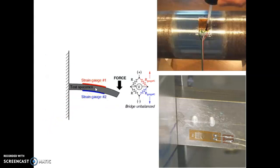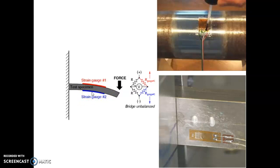Here is an example of using two strain gauges to measure force. A cantilever member has a force applied at the tip, causing bending. Two strain gauges are glued — one on top and one underneath the member. The top gauge (red) is subjected to tension and its resistance increases; the bottom gauge (blue) is subjected to compression and its resistance decreases. These are connected in a Wheatstone bridge, and the change in resistance is represented as a change in EMF on the potentiometer.